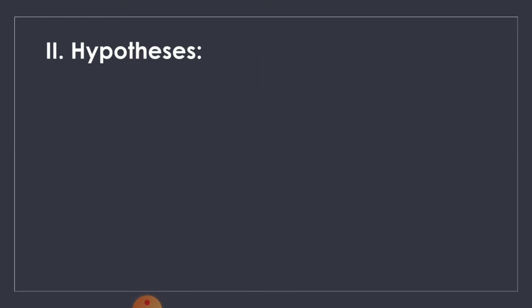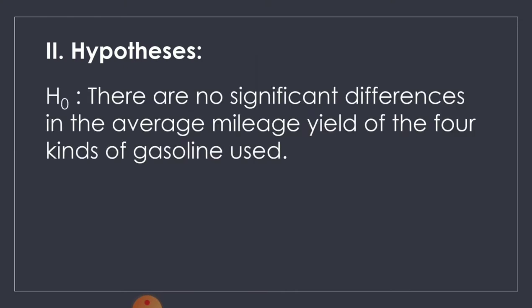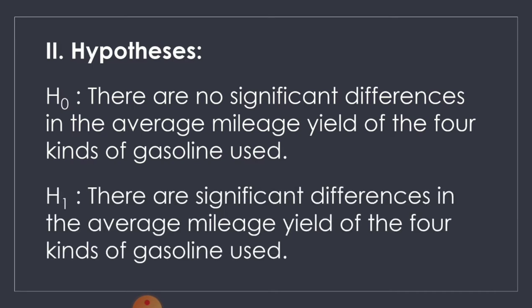Then, formulate the hypothesis. For the null hypothesis: there are no significant differences in the average mileage yield of the 4 kinds of gasoline used. For the alternative hypothesis: there are significant differences in the average mileage yield of the 4 kinds of gasoline used.